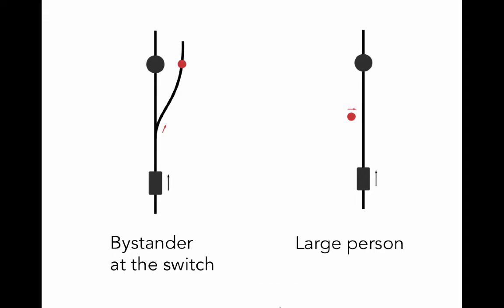But what is the difference between pulling a lever to switch a track thus leading to the death of one person but avoiding the death of five and pushing someone onto the tracks thus leading to the death of one person but avoiding the death of five?